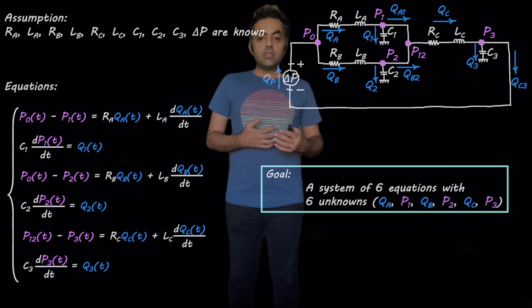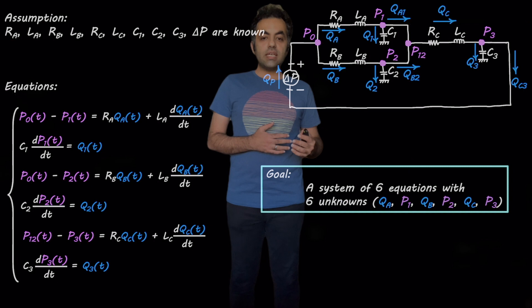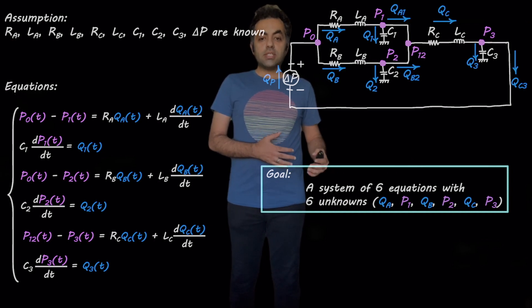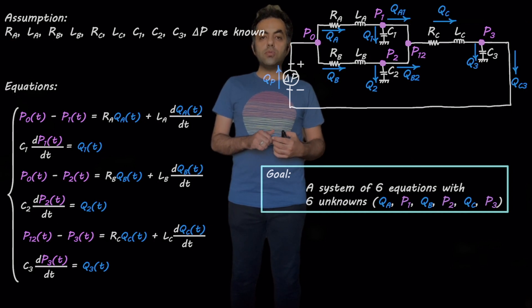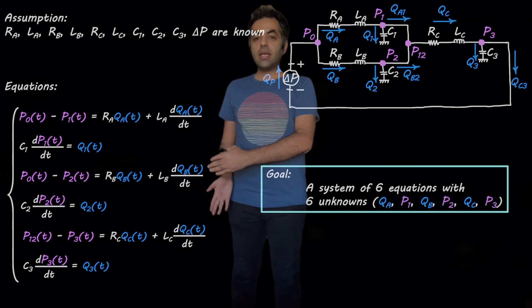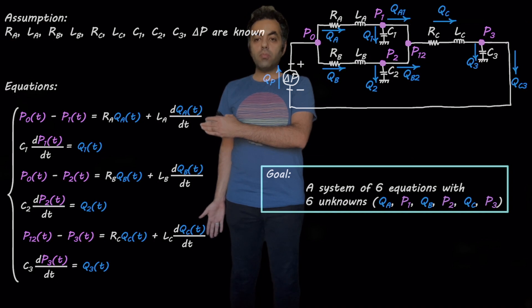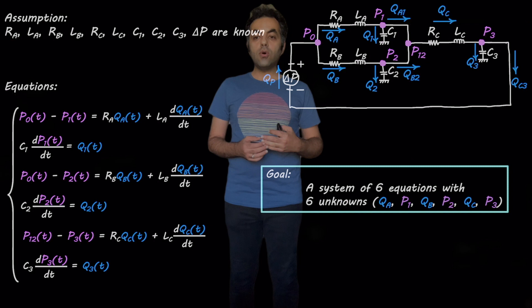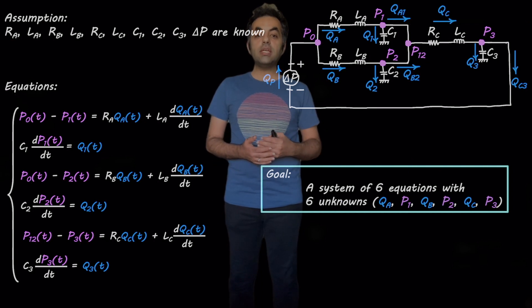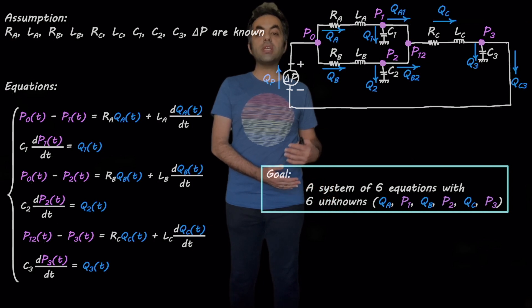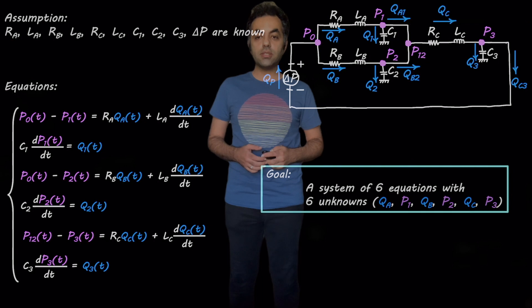Our goal is to derive a system of six equations with six unknowns. The state variables that we want to keep are QA, P1, QB, P2, QC, and P3. But if you look at the system of equations that we have here, we have more than six unknowns. For example, we have Q1, Q2, and Q3, or we have P0 and P12. The goal is to write these other unknowns — Q1, Q2, Q3 — in terms of the state variables. For example, if we can write Q1 and Q2 in terms of QA, QB, QC, then we can eliminate these unknowns.